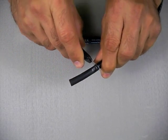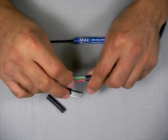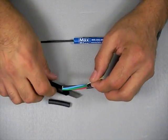Start by stripping back the overall outer jacket 1 inch. Then using a blade or scissors cut the filler.